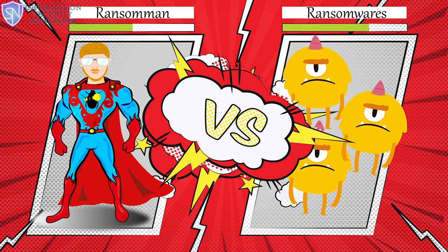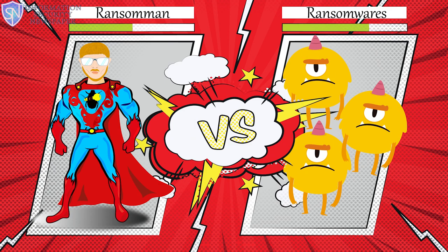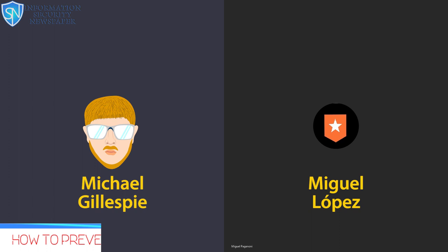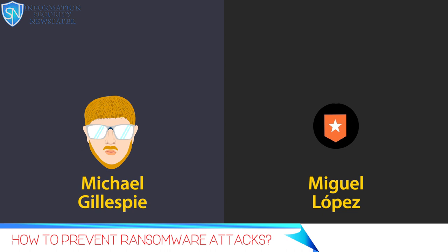My name is Michael Gillespie, and I'm a self-proclaimed ransomware hunter. I pretty much work a lot with trying to break ransomwares and helping victims recover their files. The number one way of protecting against losing data from ransomware is definitely backups.